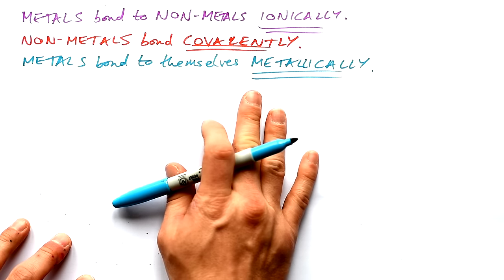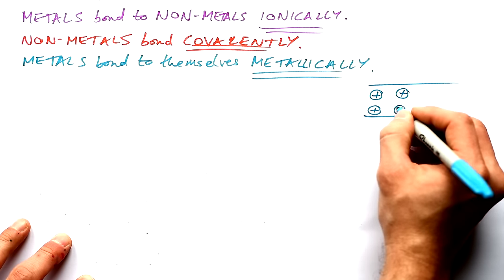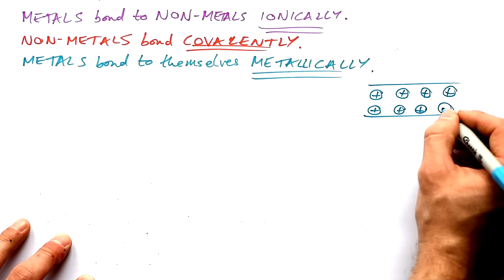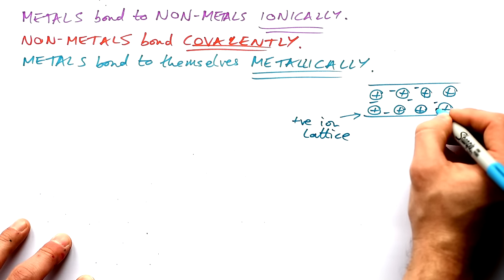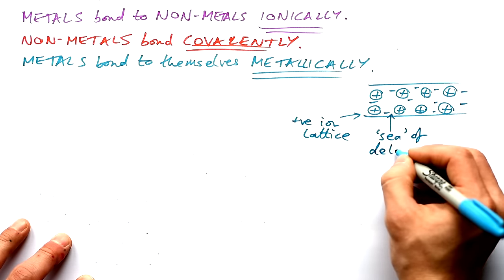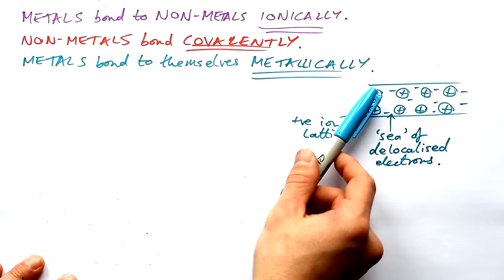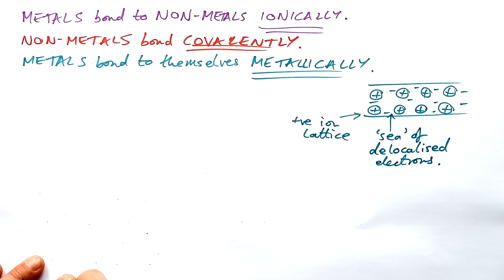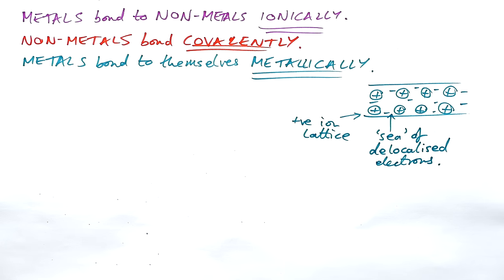We're going to very quickly cover metallic bonding because that's a really easy one. All you need to know is that we have a lattice of positive ions — lattice just means a grid — surrounded by a sea of delocalized electrons. Delocalized means they are not on the atoms themselves. An ion is any atom or molecule that has lost electrons, and this is why metals make good conductors: the electrons are delocalized and can flow easily.